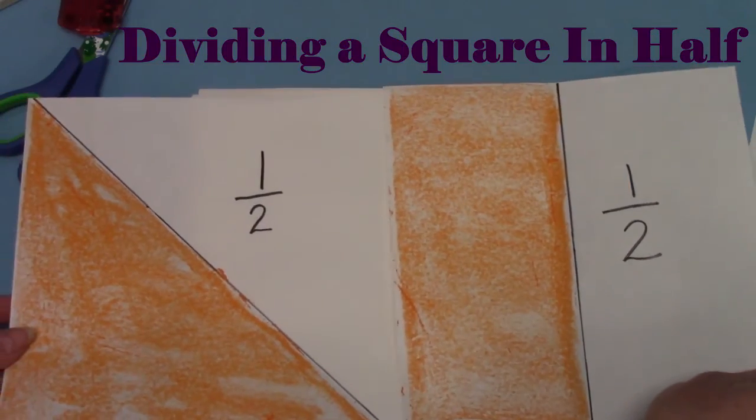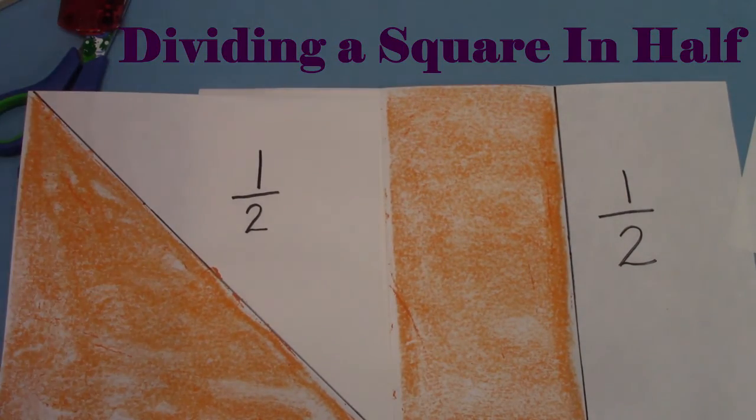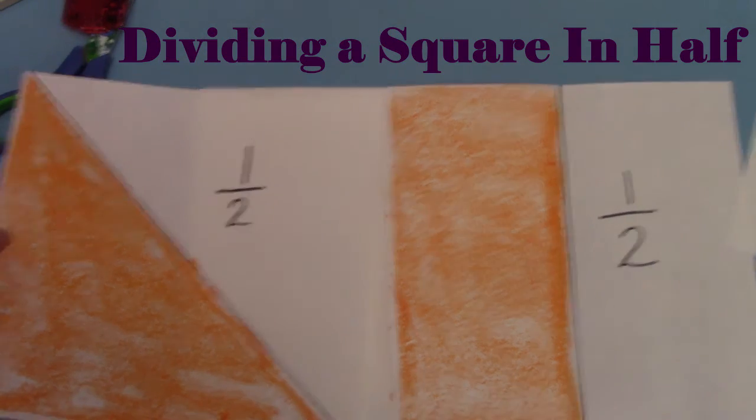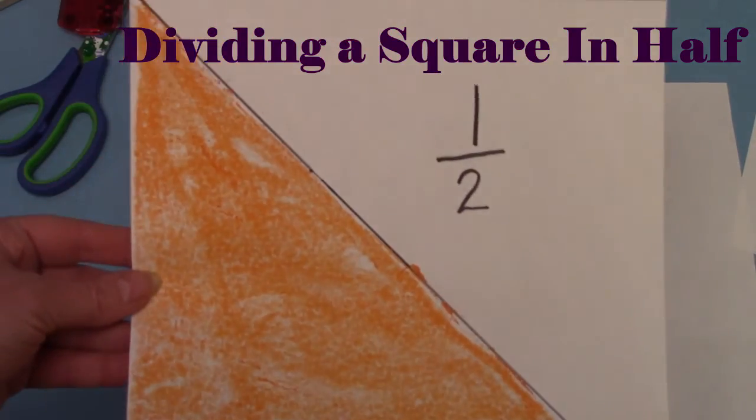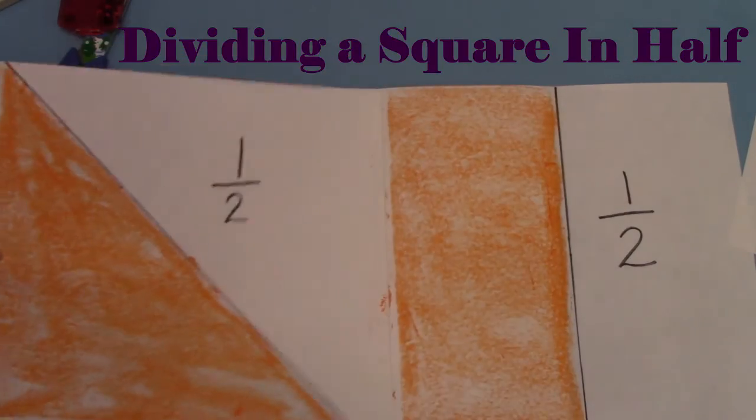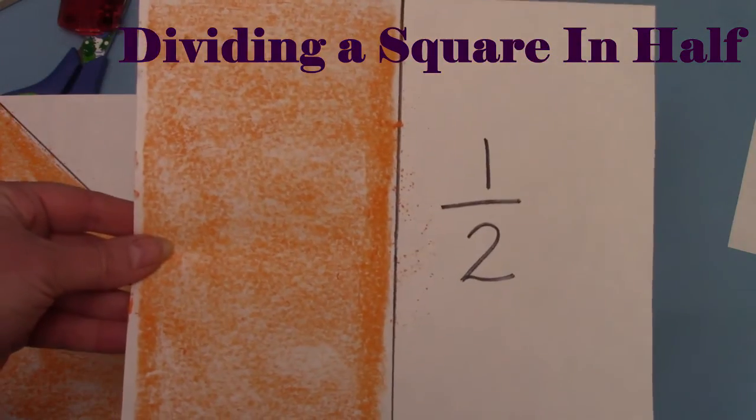Here are two different ways to divide your square in half. We can divide it diagonally making two triangles, or we can divide it straight up and down making two rectangles.